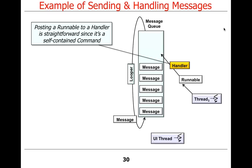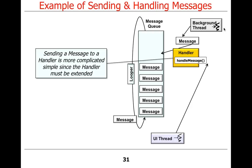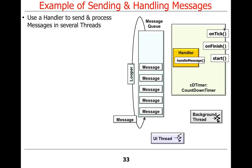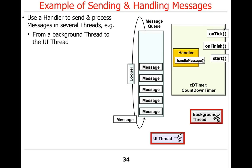Let's look at an example of sending and handling messages. This is a fun example because it looks inside Android itself at how some things work internally. Message handling is more complicated than runnable handling because you have to pass a message to a handler and also override the handleMessage hook method. We're going to use an example based on something called a CountdownTimer - an interesting abstraction provided by Android. We'll start the countdown timer in a background thread, and then it will run in the UI thread.